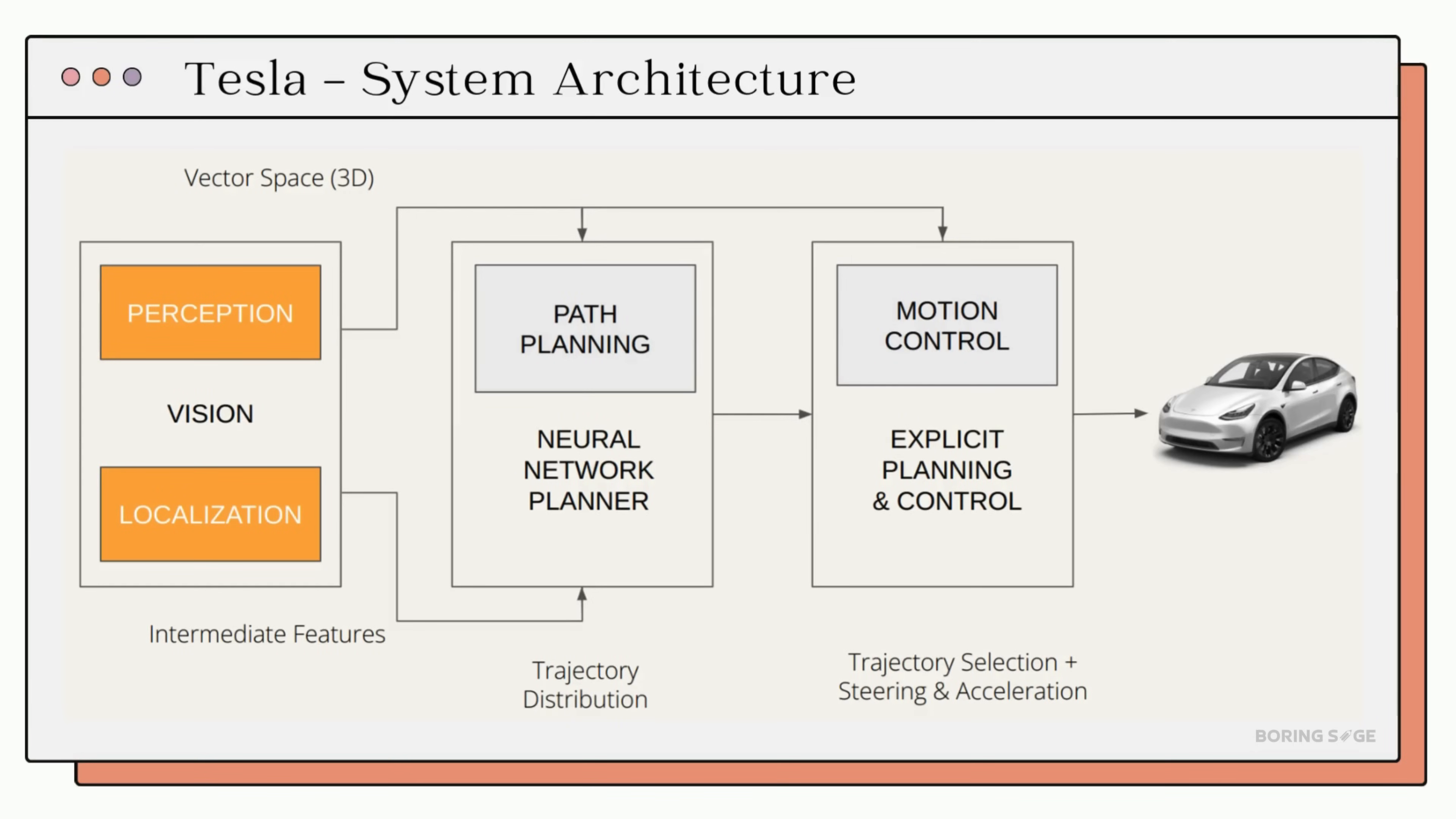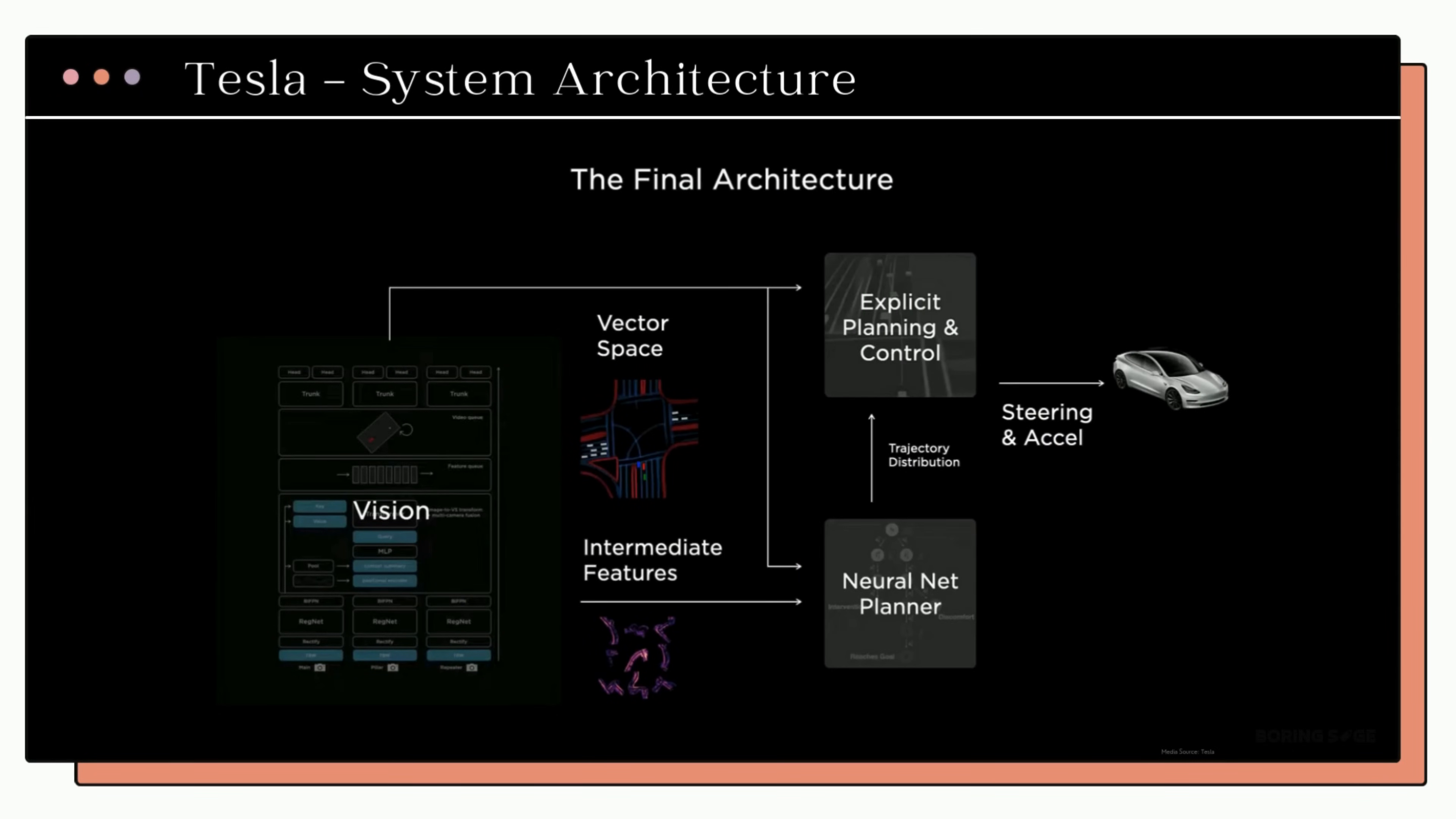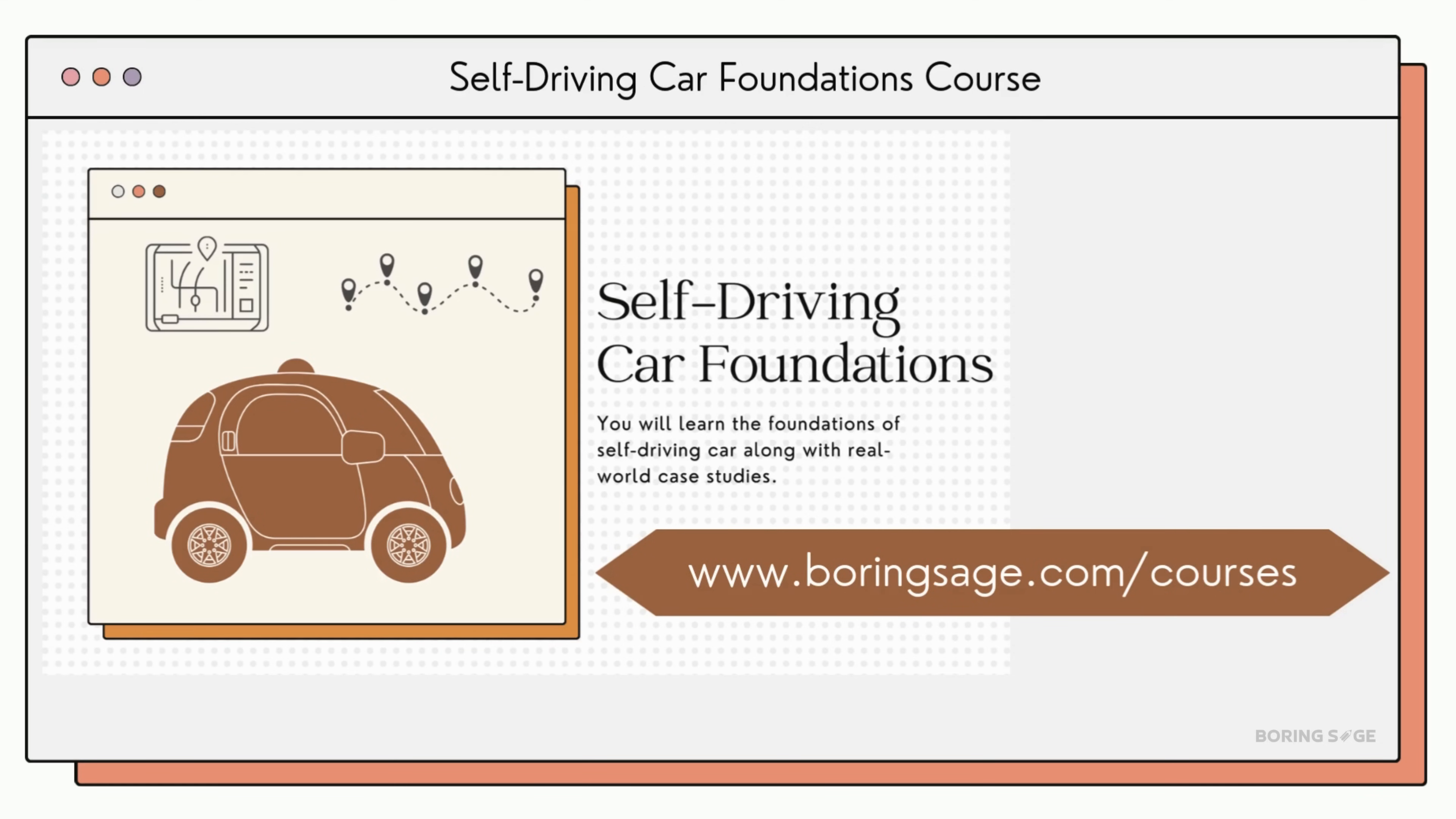That completes the system architecture of Tesla's full self-driving system. Here is the final system architecture of Tesla designed by the Tesla AI team. This is what we covered in today's case study. The system is constantly evolving. I hope you found this information valuable. For more in-depth coverage of Tesla's FSD system and other self-driving car technologies, check out our full course at ByteByteGo.com. Link is available in the description below. Let me know in the comment section what autonomous stacks you would like us to decode in future episodes.